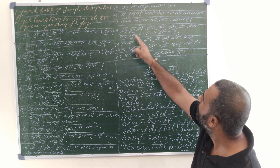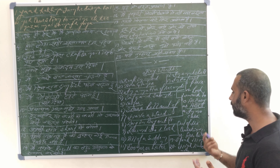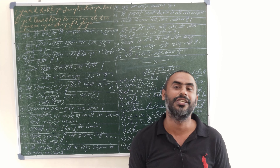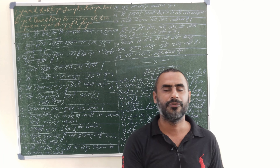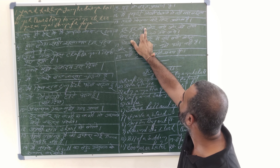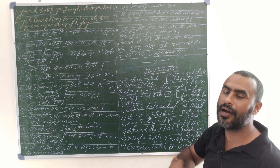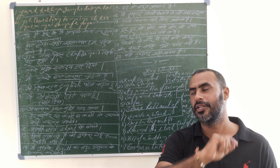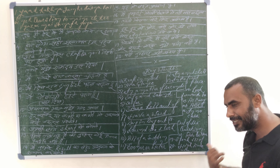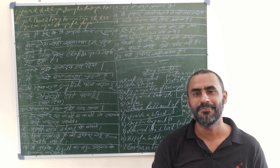Next: 'tumse milna mere liye asambhav ho hai' — meeting you is impossible. Now the phrase we use is 'out of the question.' So: meeting you is out of the question, or it is out of the question to meet you. Whenever impossibility comes up, we use 'out of the question.' Next we have 'dure dure se' — from far and near. People came from far and near to take my interview. So: far and near people did come to meet me.